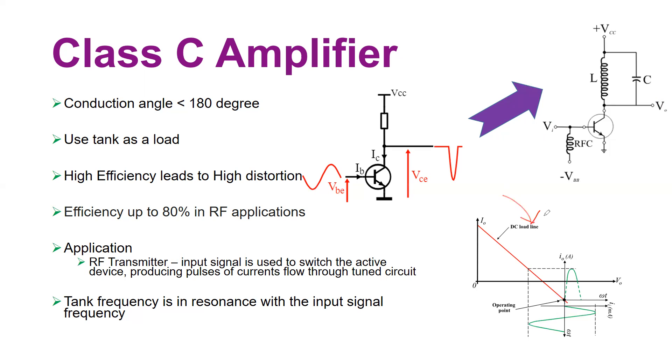Here is a load line analysis that helps us understand the Q point for this circuit. Let's say you have the output current, you have the output voltage, and this red line indicates your load line called the DC load line.